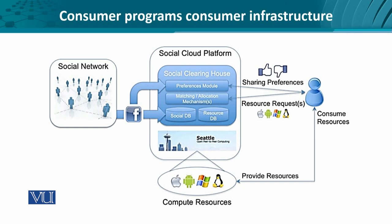Seattle as an open source peer-to-peer computing platform computes resources across a variety of operating systems — Windows, Android, Apple, and Fedora or Linux. The resources are requested to the consumer, and once the consumer agrees through an authentication mechanism, these resources start getting consumed. The advantage of the social cloud platform is that, similar to a peer-to-peer network, as the social network grows, the variety of resources increases, which in turn demands less long-term capital expenditure from organizations.